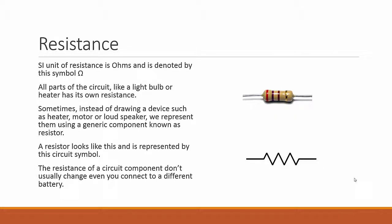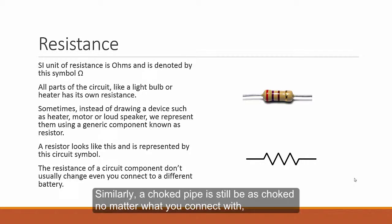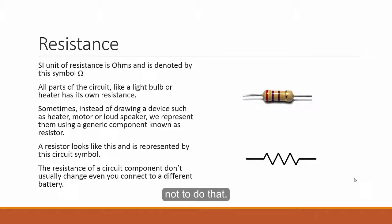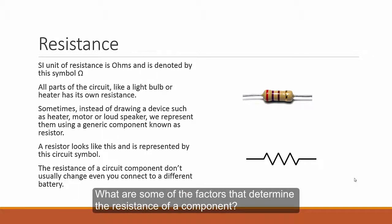The resistance of circuit components don't usually change even if you connect to a different battery. Similarly, a choke pipe is still as choked no matter where you connect it. So resistance is usually an inherent property of the component unless it's designed especially not to do that. What are some of the factors that would determine the resistance of a component?